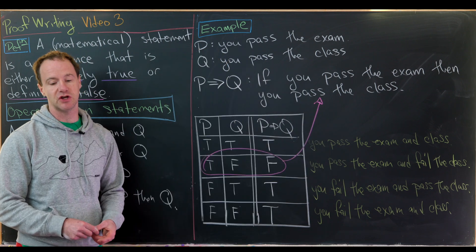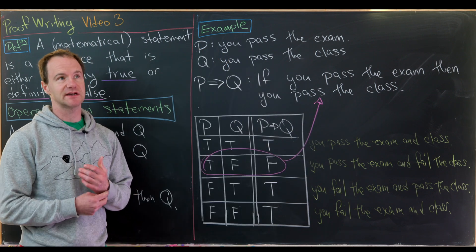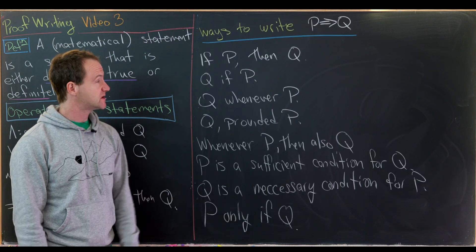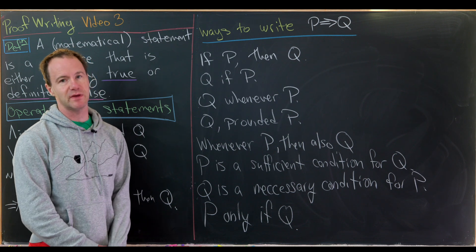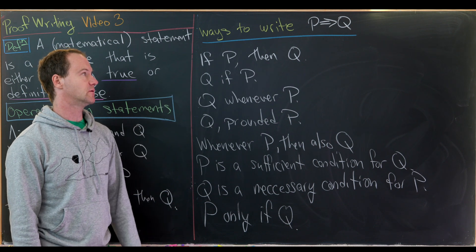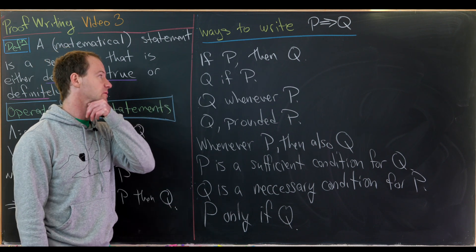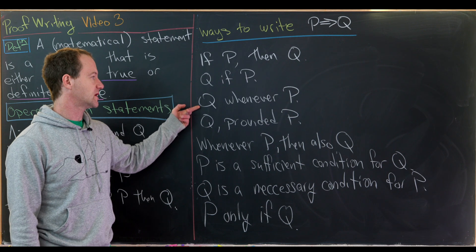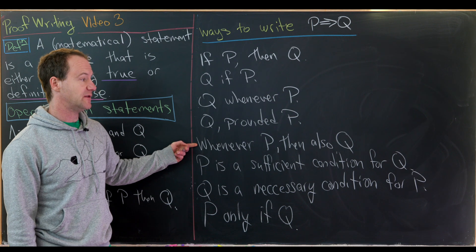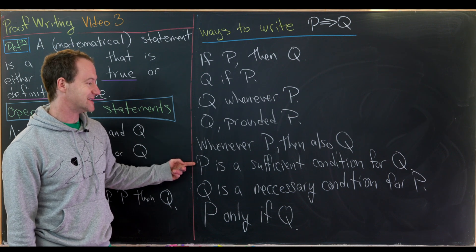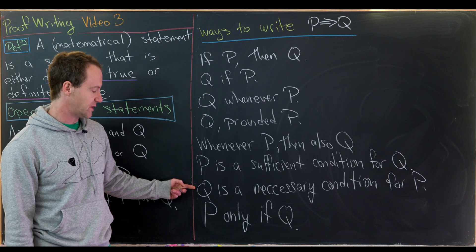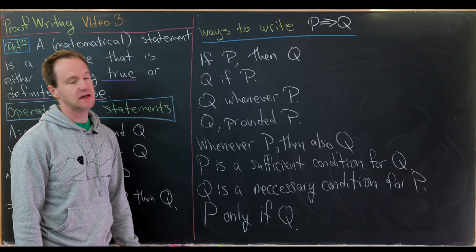There are many ways to write the conditional statement p → q. Here are several: 'if p then q,' 'q if p,' 'q whenever p,' 'q provided p,' 'whenever p then also q,' 'p is a sufficient condition for q,' 'q is a necessary condition for p,' and 'p only if q.'